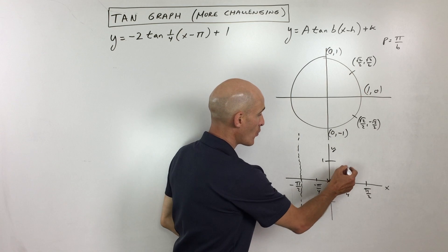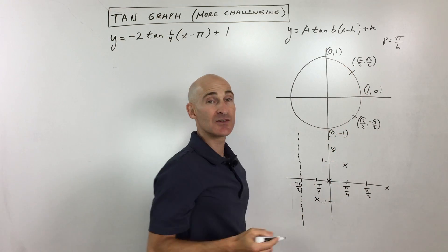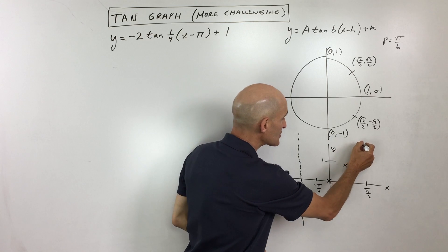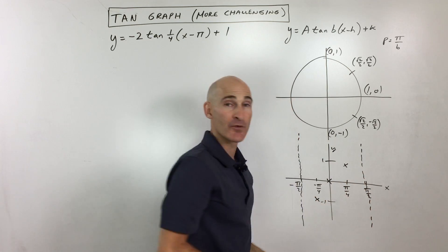At pi over 4, y divided by x gives us 1. And then at pi over 2, 1 divided by 0 is undefined. So you go ahead and draw another vertical asymptote in.